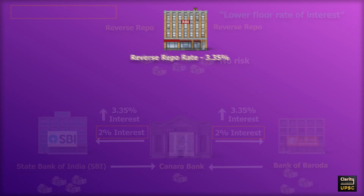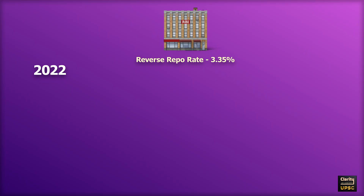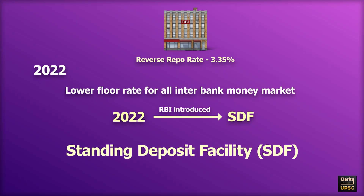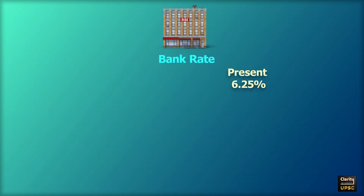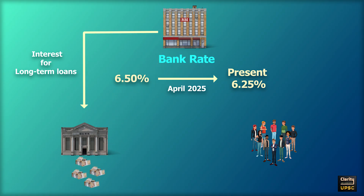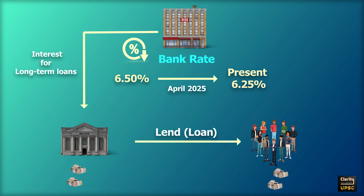Till 2022, the reverse repo rate worked as the lower floor rate for interbank money market. In 2022, RBI introduced Standing Deposit Facility (SDF), which is similar to reverse repo — we will explain this later. Next is bank rate. Right now it is 6.25%, reduced from 6.5% in April 2025. Bank rate is the interest RBI charges when it gives long-term loans to banks. Banks can then lend cheaper loans to people, though this tool is not much used by banks and RBI generally.